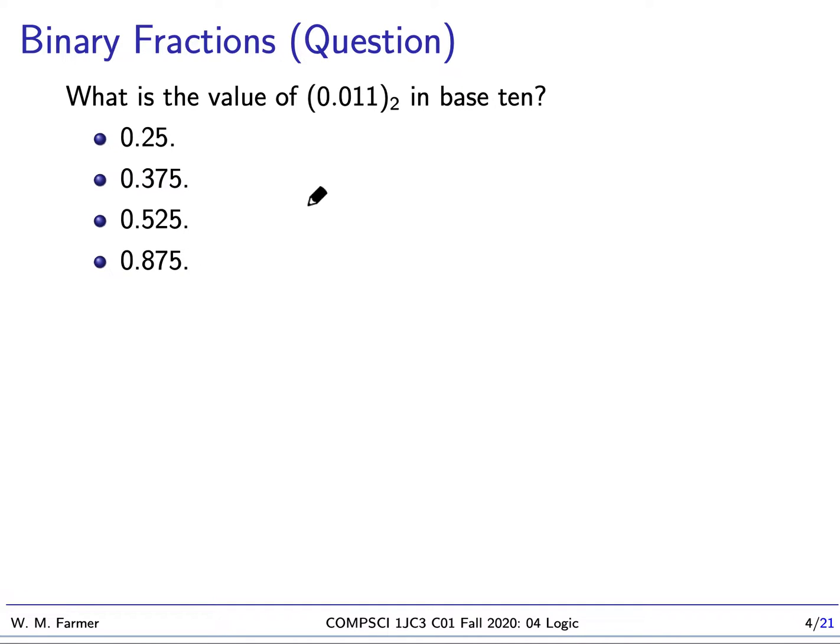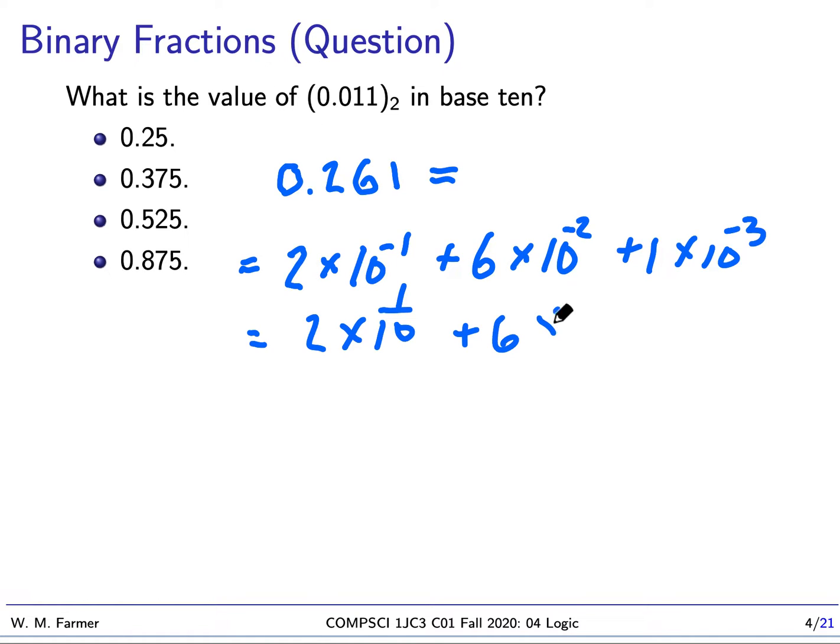Okay, I'm back. This is not that hard if you remember that binary works exactly like decimal except we replace 10 with 2. So let's say we have a decimal fraction like 0.261. What does that equal? You could say 261 thousandths, but actually what it equals is 2×10^-1 + 6×10^-2 + 1×10^-3.